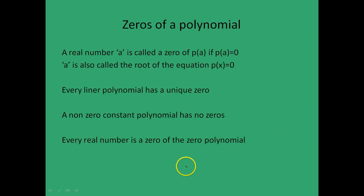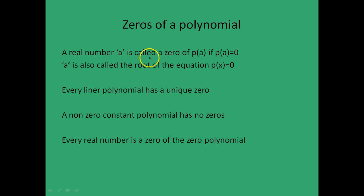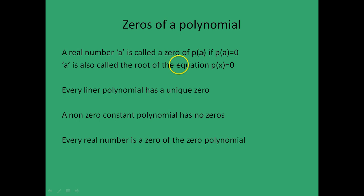Now we will move on to what we mean by the zeros of a polynomial. Zeros of a polynomial are very important for the analysis of polynomials and their further use. We define the zero of a polynomial p(x) as a real number a such that p(a) is equal to 0. Also, a is called the root of the equation p(x) = 0 — you see how a polynomial can be converted to an equation by putting it equal to 0.